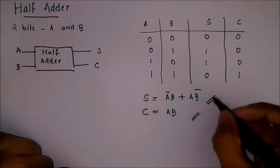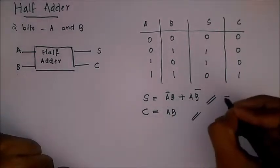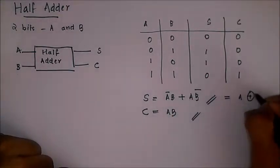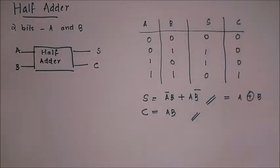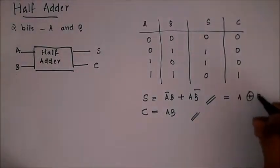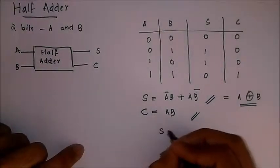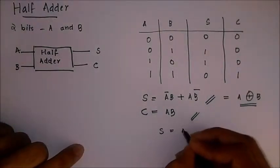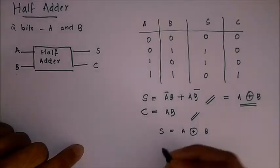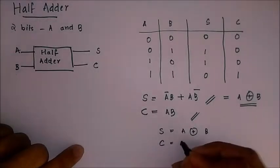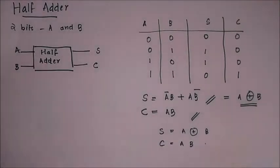This combination right here is A bar B plus A B bar, which is equivalent to the XOR gate, that is A XOR B. The circle is the representation for XOR gate. So our sum S is obtained from an XOR gate with inputs A and B, and carry is an AND gate with inputs A and B.